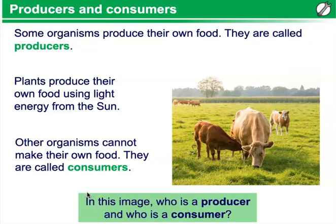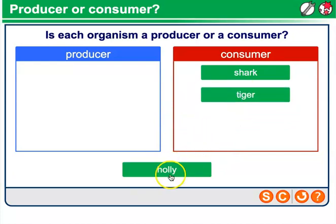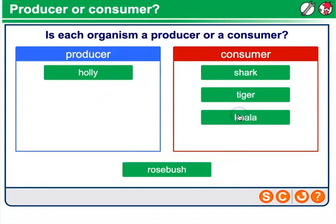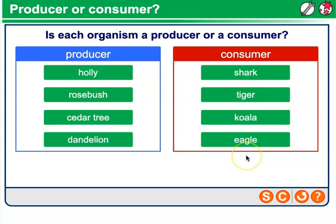In this image, who is a producer and who is a consumer? A shark must consume its food — it's a consumer. A tiger, the same. Holly is a plant, so it must be a producer. A koala eats other plants, making it a consumer. A rose bush is a producer. A cedar tree is also a producer. A dandelion grows in the spring and is a type of plant — a producer. And finally, an eagle is a consumer.